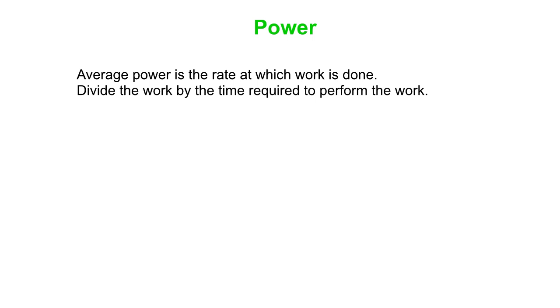So first, power. Average power is the rate at which work is done. If you simply divide the work by the time required to perform the work, then you've got the power. So there's our power equation. Capital P for power, it's work over time, or W over t.